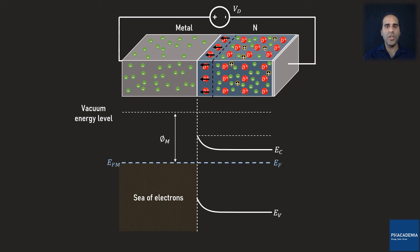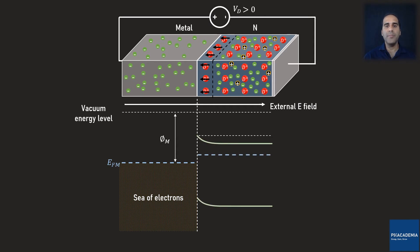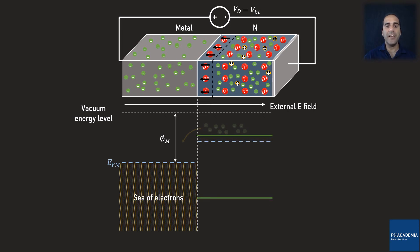Let's bias forwardly this Schottky diode by an external voltage source Vd and see what will happen. Let's assume Vd is zero at first, so nothing will happen. By increasing Vd gradually, an external electric field opposing the depletion region electric field forms. This external electric field lifts up EC of the n-semiconductor. Once Vd gets equal to the built-in voltage, EC gets flat and free electrons can easily diffuse into the metal. This process is also called thermionic emission. Therefore, we have a flow of electron current from the n-semiconductor to the metal.